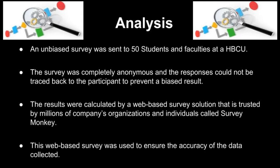Analysis. The survey procedure performed to ensure accuracy during the collection of data coding and entry was very precise. An unbiased survey was sent to 50 students and faculty at the HBCU. The survey was completely anonymous and the responses could not be traced back to the participants to prevent biased results. The results were calculated by a web-based survey solution trusted by millions, called SurveyMonkey. Questionnaires were used to show evidence of brain drain — participants who left their countries and never returned. 15 out of 50 surveys were usable due to 35 participants not participating in the questionnaire. Thus, missing data does not affect the results. Results from the questionnaire can be found in the research appendix.